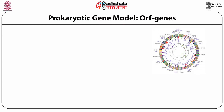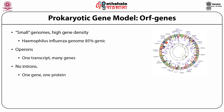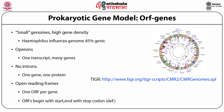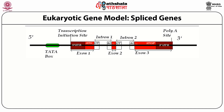Regarding the prokaryotic gene model, the genome is small with high gene density. For example, Haemophilus influenzae has 85% genic content, has operons — one transcript for many genes — no introns, one gene per protein, and one open reading frame per gene. Open reading frames begin with a start codon and end with a stop codon. Genome information is available on the TIGR and NCBI websites.